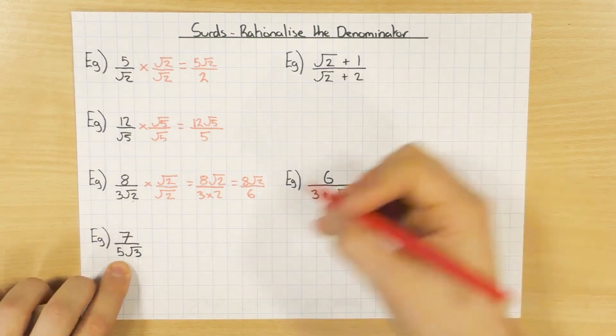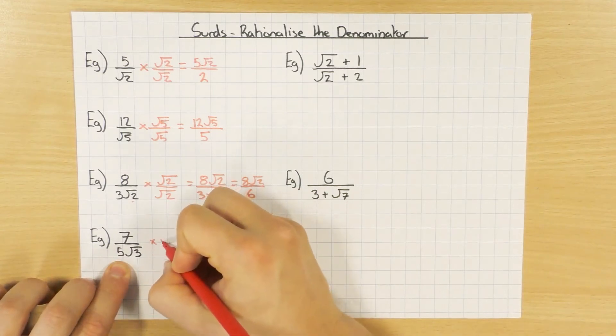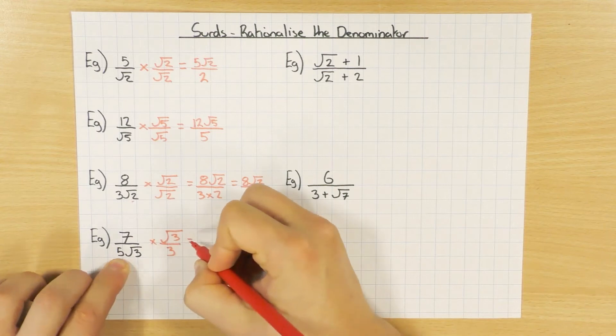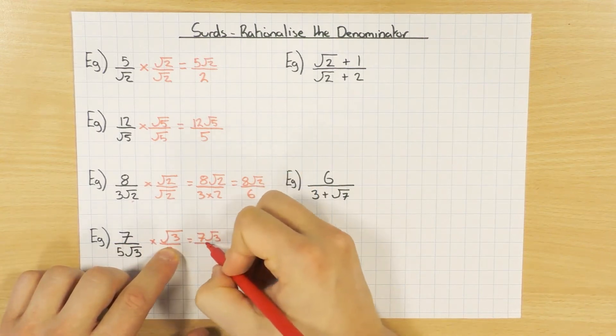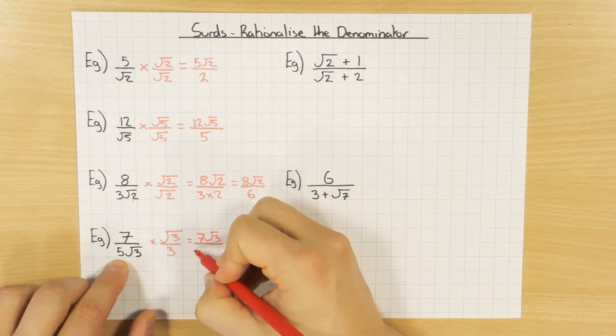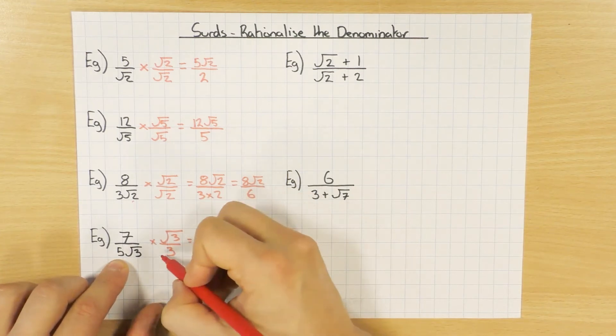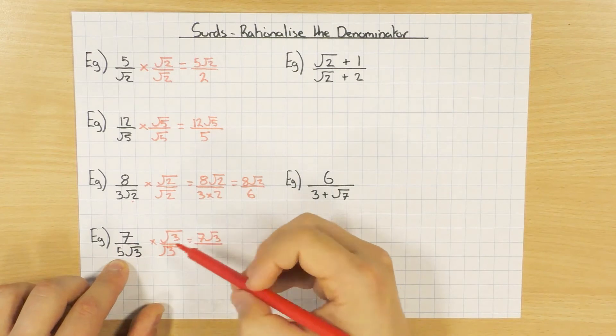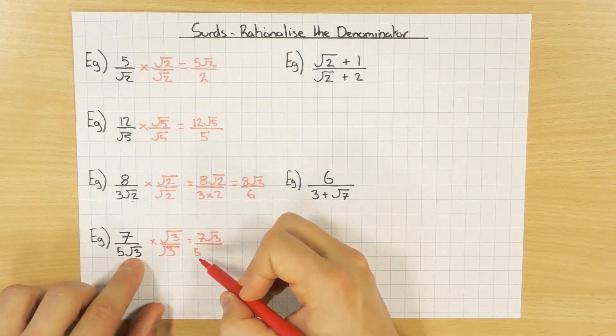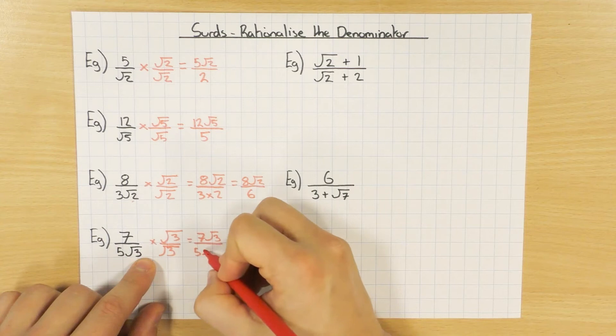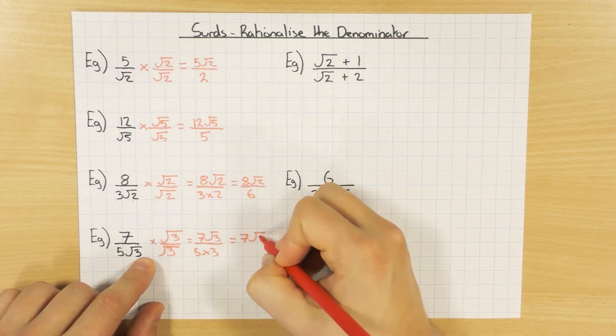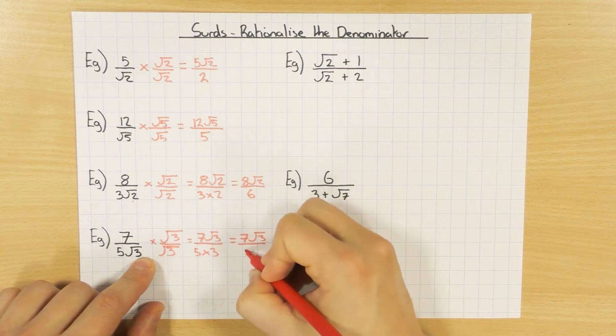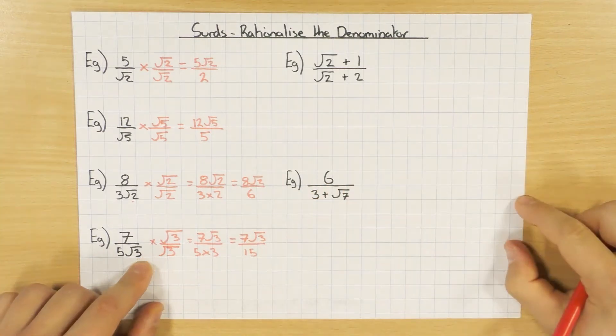Same sort of thing going on this one. I'm going to times it by root 3 over root 3. So 7 times root 3 is just 7 root 3, and on the bottom 5. So 5 times, then root 3 times root 3 is going to give me 3. So a little bit of simplifying, that'll be 7 root 3 all over 15.